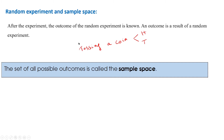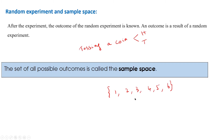Now, what is sample space? The set of all possible outcomes of a random experiment is called the sample space. For example, if the experiment is tossing a coin, then the sample space is head or tail. If the experiment is rolling a die, then the sample space will be the numbers 1, 2, 3, 4, 5, 6, because when we roll a die we may get any one of these outcomes. The set of all those outcomes constitutes the sample space.